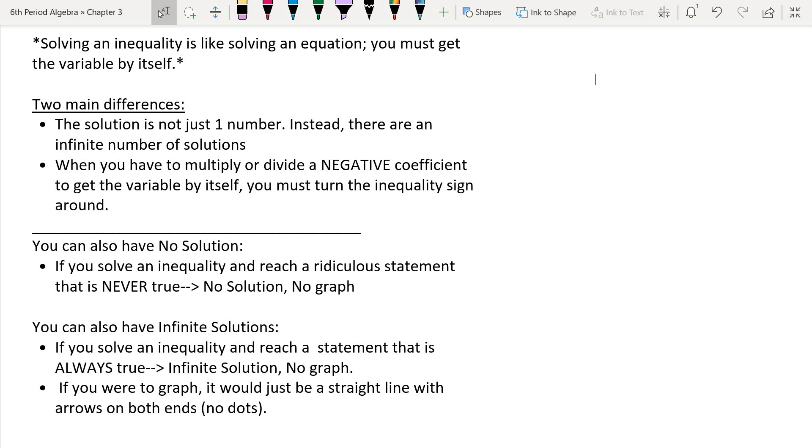And then, just remember, when you multiply or divide by a negative coefficient, that's a number glued to your variable, you have to turn your inequality sign around. You have to flip it. In today's lesson, you're going to see where we get a solution, when we don't get a solution, and when there's infinite solutions.